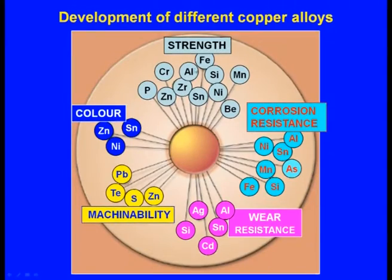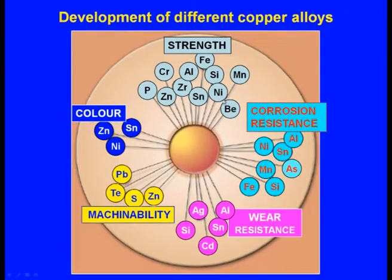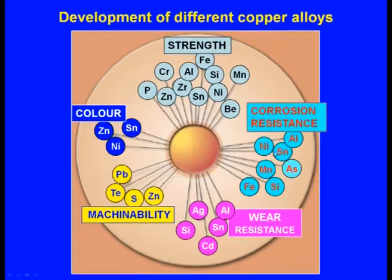If your objective is to enhance the strength of the alloy, then these alloying elements are to be added: phosphorus, zinc, zirconium, chromium, iron, aluminum, silicon, nickel, manganese, beryllium and so on. If your objective is to increase the corrosion resistance, then we have to add elements like nickel, aluminum, tin, manganese, iron, silicon, arsenic and so on.